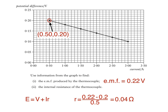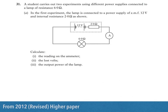Now we'll look at our second question, which comes from the 2012 Revised Higher paper — this time we'll answer the whole question. A student carries out two experiments using different power supplies connected to a lamp of resistance 6 ohms. In the first experiment, the lamp is connected to a power supply of EMF 12 volts and internal resistance 2 ohms. We're asked to calculate: 1. the reading on the ammeter, 2. the lost volts, and 3. the output power of the lamp.